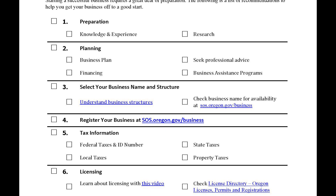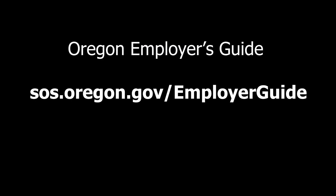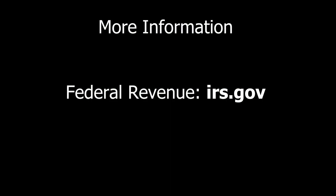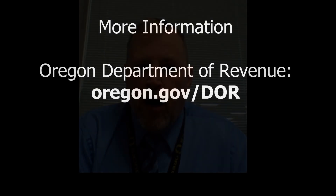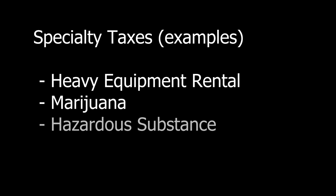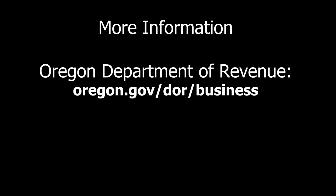The guide really gets the person thinking of what questions to ask and where to get that information. If you're going to have employees, there's also the Oregon Employers Guide, which contains many answers to questions concerning payroll taxes. The IRS also has information on irs.gov. The Department of Revenue has information on oregon.gov covering the taxes we administer. We also administer many specialty taxes that apply only to certain types of businesses, such as heavy equipment rental tax, marijuana tax, hazardous substance tax, lodging tax, and others. A full list can be found on our website.